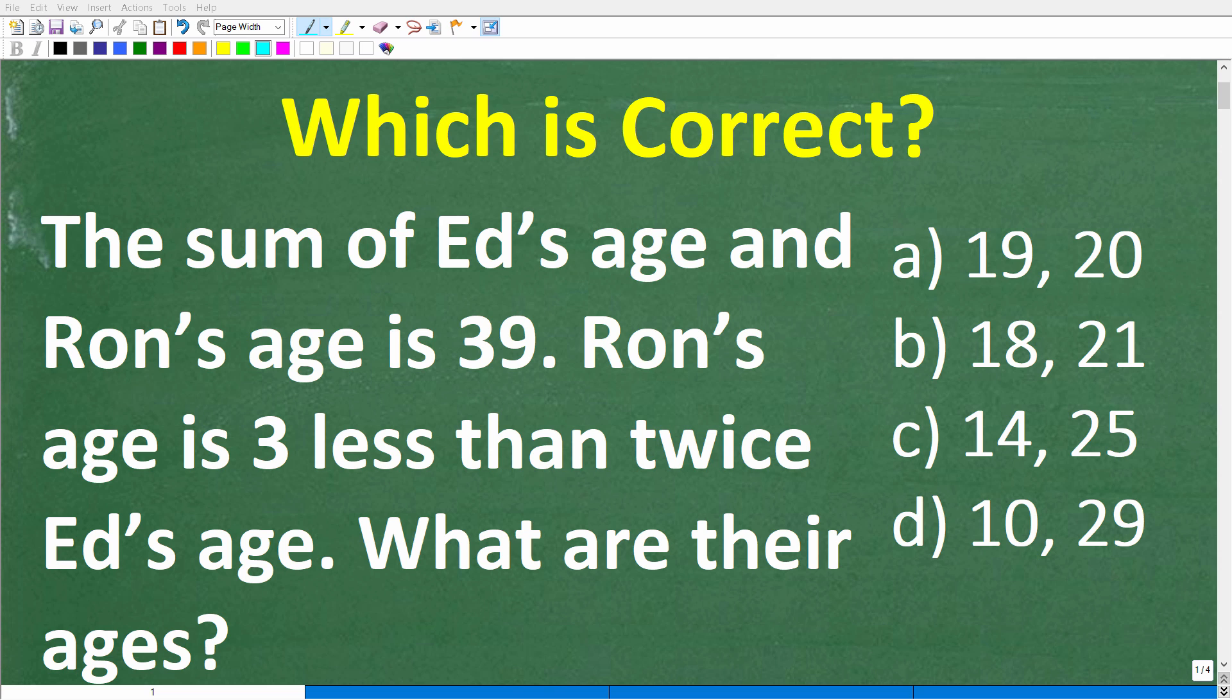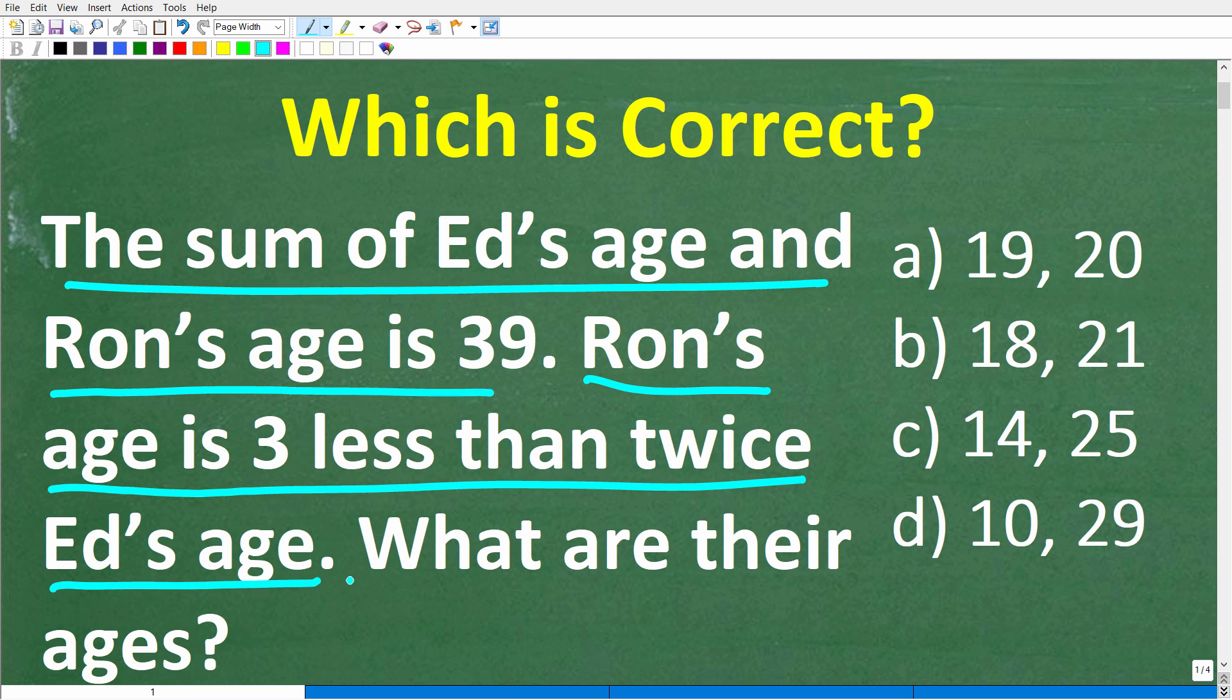Okay, so let's see if you have the algebra skills to solve this interesting algebra word problem. Let me go ahead and read the problem. It is as follows. The sum of Ed's age and Ron's age is 39. Ron's age is three less than twice Ed's age. What are their ages?